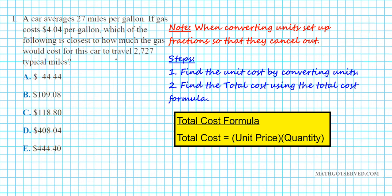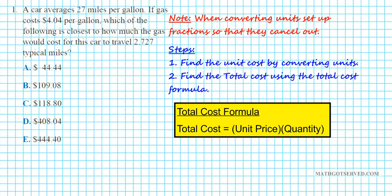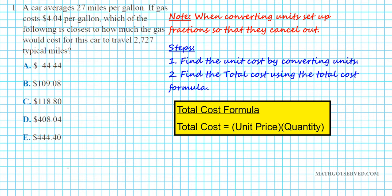One thing you want to note when converting units is that you want to ensure it's set up in such a way that identical units cancel out. These are the steps we're going to use: first, we're going to find the unit cost by converting units — we have miles per gallon, per gallon, and miles. Then we'll find the total cost using the formula: total cost equals unit price times quantity.